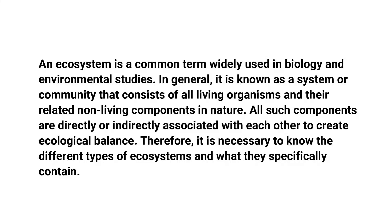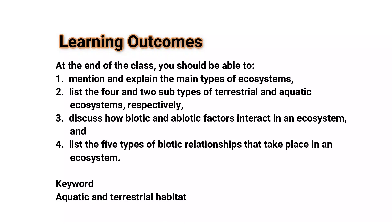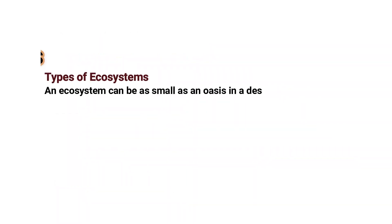Therefore, it is necessary to know the different types of ecosystems and what they specifically contain. At the end of the lesson, you will be able to mention and explain the main types of ecosystems, list the four and the two sub-types of terrestrial and aquatic ecosystems respectively, discuss how biotic and abiotic factors interact in an ecosystem, and list the five types of biotic relationships that take place in an ecosystem. Our keywords include aquatic and terrestrial habitats.